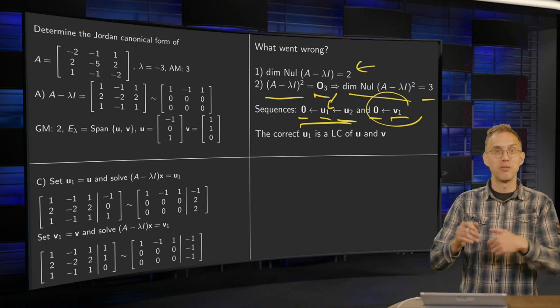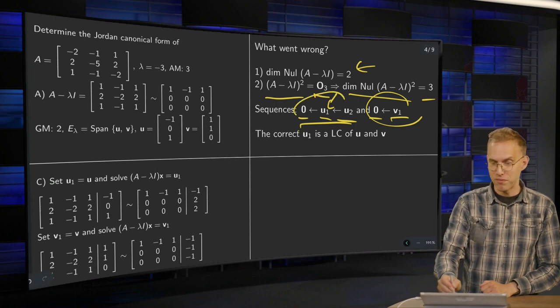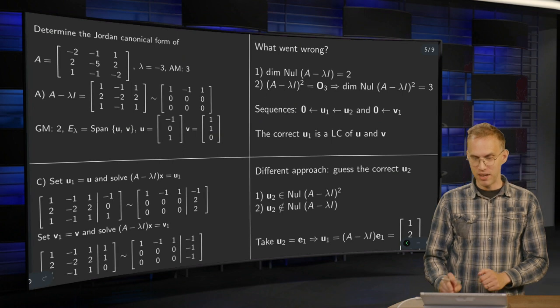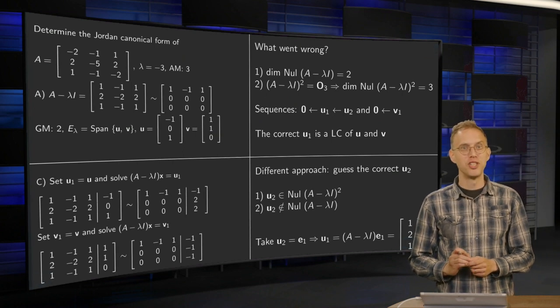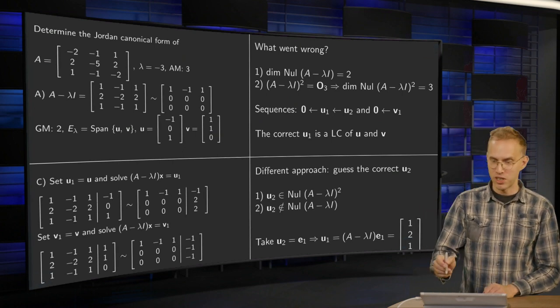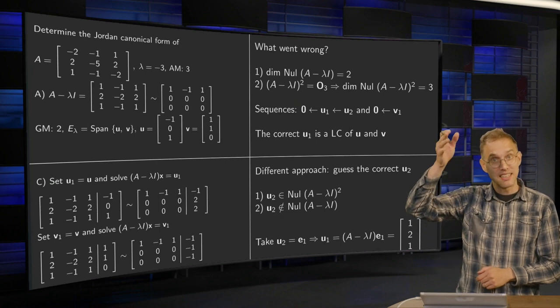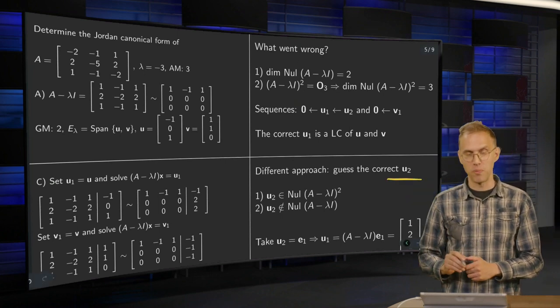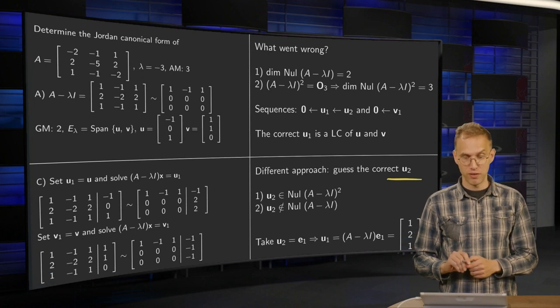So that's the problem. So how are we going to go on? How are we going to find this second cycle? Well by a different approach, sort of more ad hoc approach. Well let's try to guess the correct endpoint. Let's try to guess some correct u_2. So what's the condition for u_2?